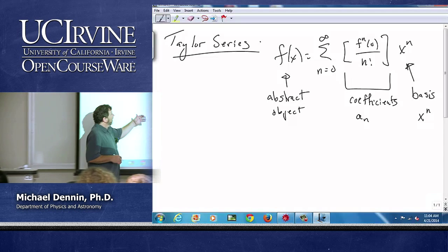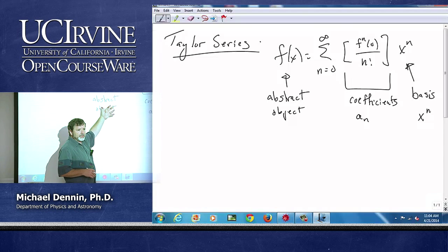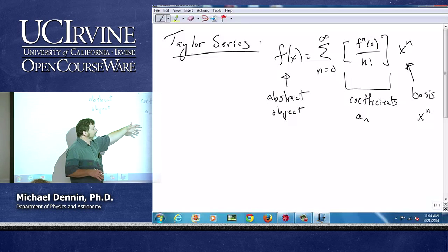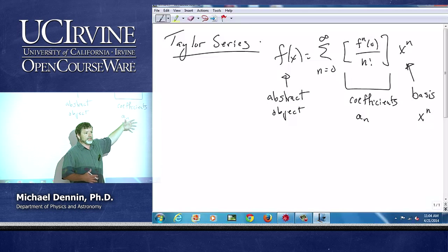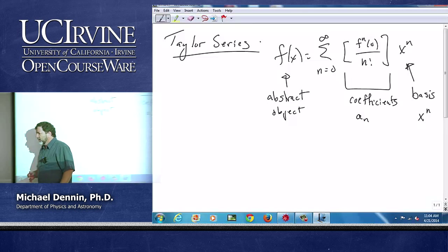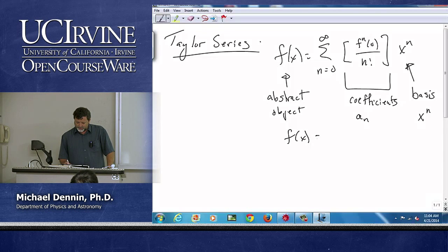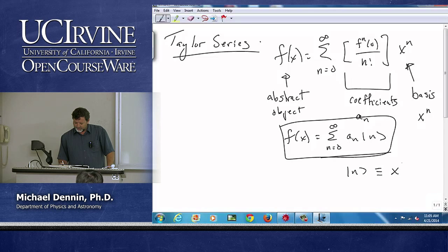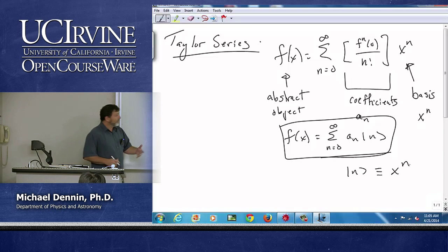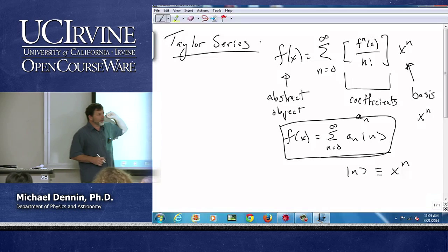I'm taking some abstract general function and I'm basically writing it in component notation. That's what a series expansion does for me. I could write this very abstractly as f(x) equals the sum over n equals zero to infinity, a sub n ket n. My ket n's are just the x to the n, and my a sub n are as defined up there.